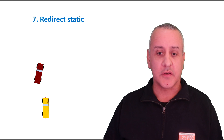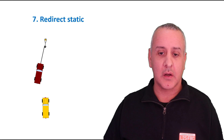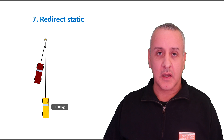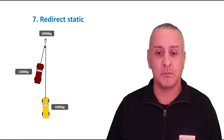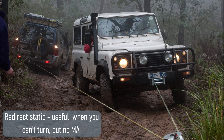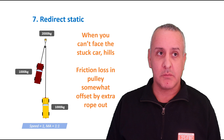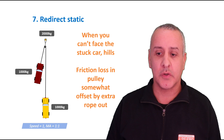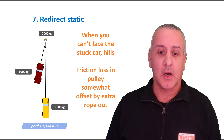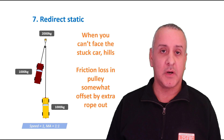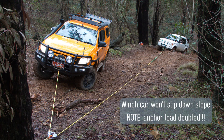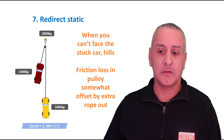Now we've got a redirect static. Again we've got an anchor point — run out a winch line and take it straight back to the stuck vehicle. A thousand kilograms required to move, a thousand there, and two thousand on the anchor point. It's not exactly a 180-degree angle so it should be a bit less, but for simplicity we'll round it up. This is actually pointless from a mechanical advantage perspective — you actually lose energy due to friction through the pulley. But it's really handy when you can't face the vehicle you're pulling. I use this a lot when pulling another car up a hill — I run a winch line out to a tree, run it back, and don't need to turn my car around or risk being pulled downhill.